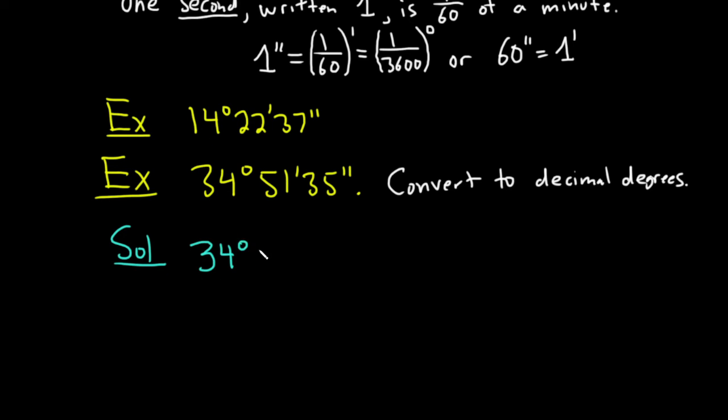You start by writing it down. So we have 34 degrees 51 minutes 35 seconds. And so this is equal to 34 degrees plus 51 minutes plus 35 seconds.